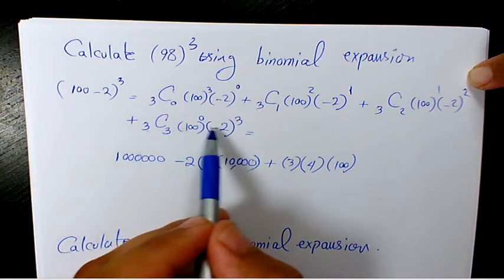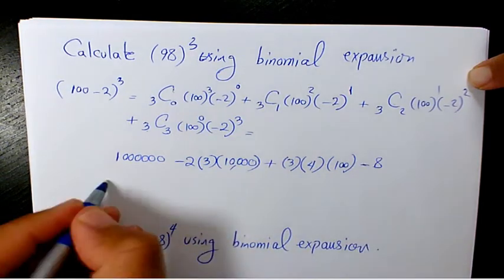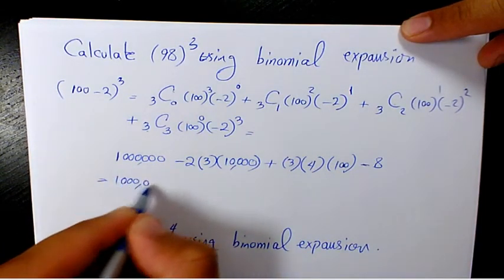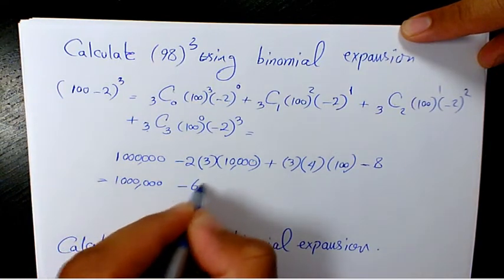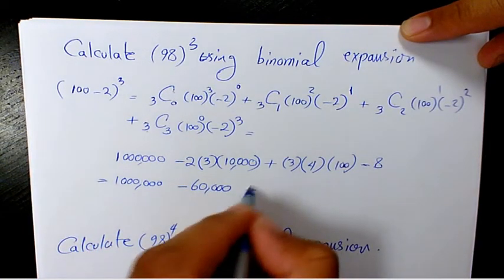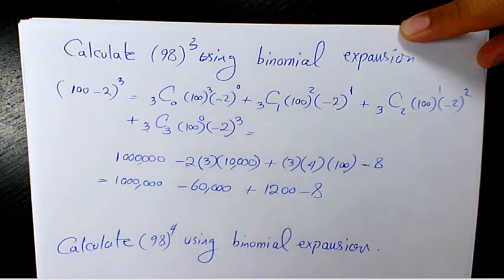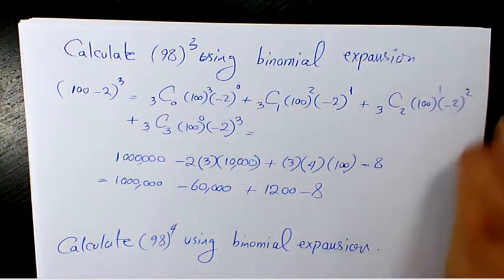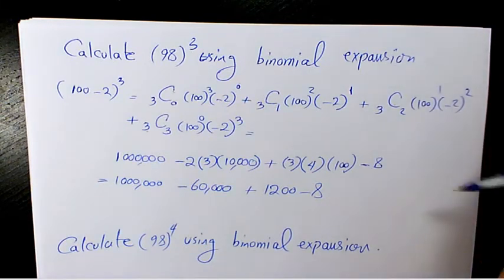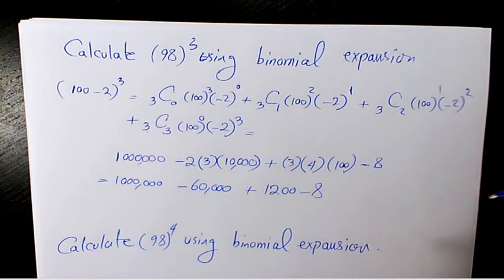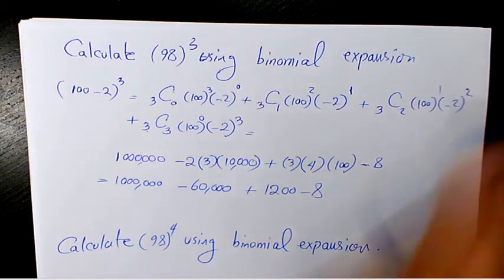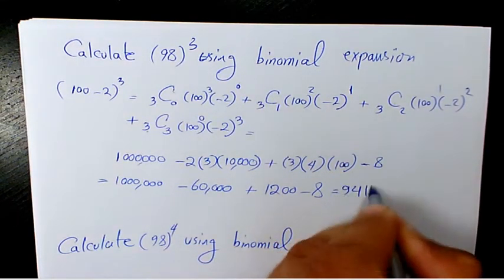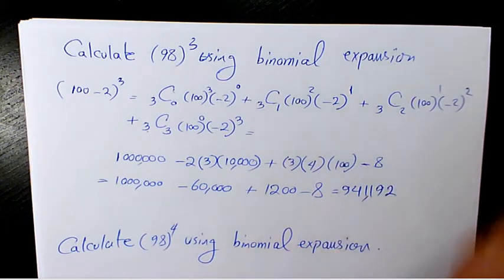100 to the power of 0 is 1, and negative 2 to the power of 3 is negative 8. So we have 1,000,000 minus 60,000 plus 1,200 minus 8. Punching that into the calculator gives us 941,192. You can check it in your calculator to see if you get the same number — and yes, you get exactly the same number.